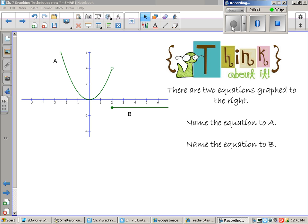As you look at this slide, it says there are two equations graphed to the right, while in this case it's to the left. Name the equation to A. Let's just look at equation A in that graph, and what equation would you say that that would be? My hope is you recognize that as a parabola, y equals x squared.